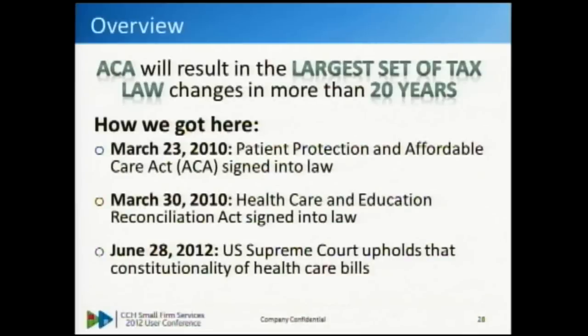In addition to the 50 tax provisions, it has over $400 billion in revenue raisers - a lot of those coming from new taxes to your clients. ACA is actually made up of two different pieces of legislation, both passed in March of 2010. We sat on pins and needles while some components rolled out until June of this year, when the Supreme Court upheld the constitutionality of the entire piece of legislation.